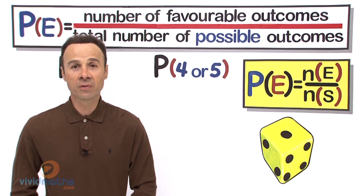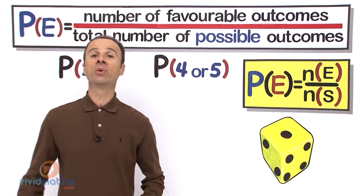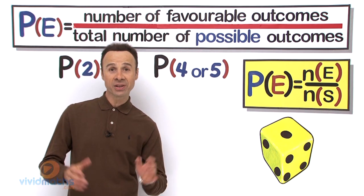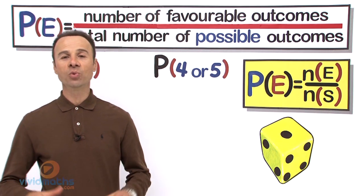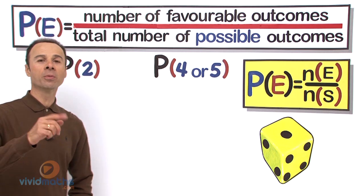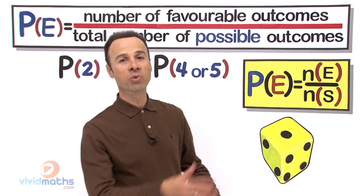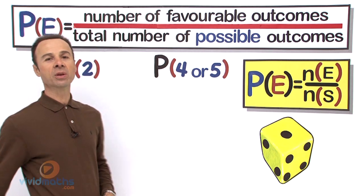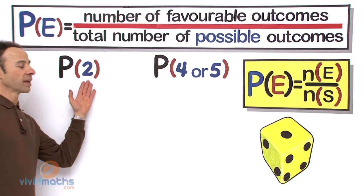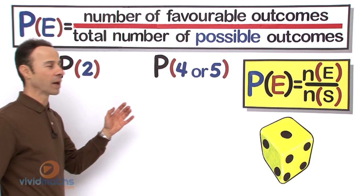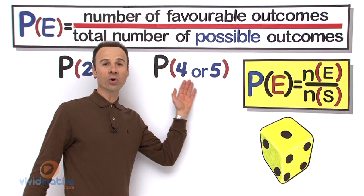Alright guys, observe and learn. We are playing with probability, the basics of probability. We are asked to find what the probability is when we take a die and roll it once. We want to find what the probability is of getting a 2, and then we are going to work out what the probability of getting a 4 or a 5.